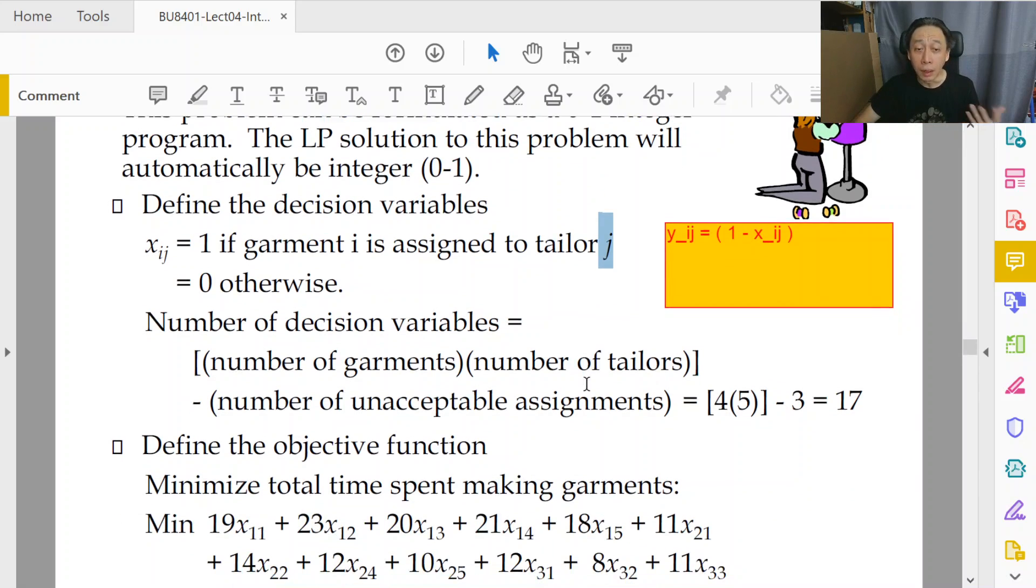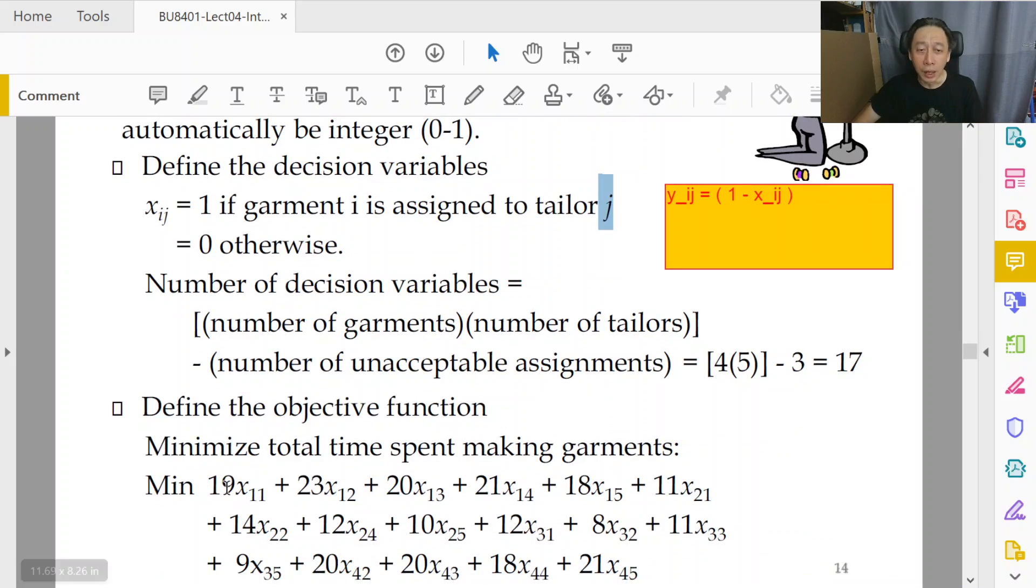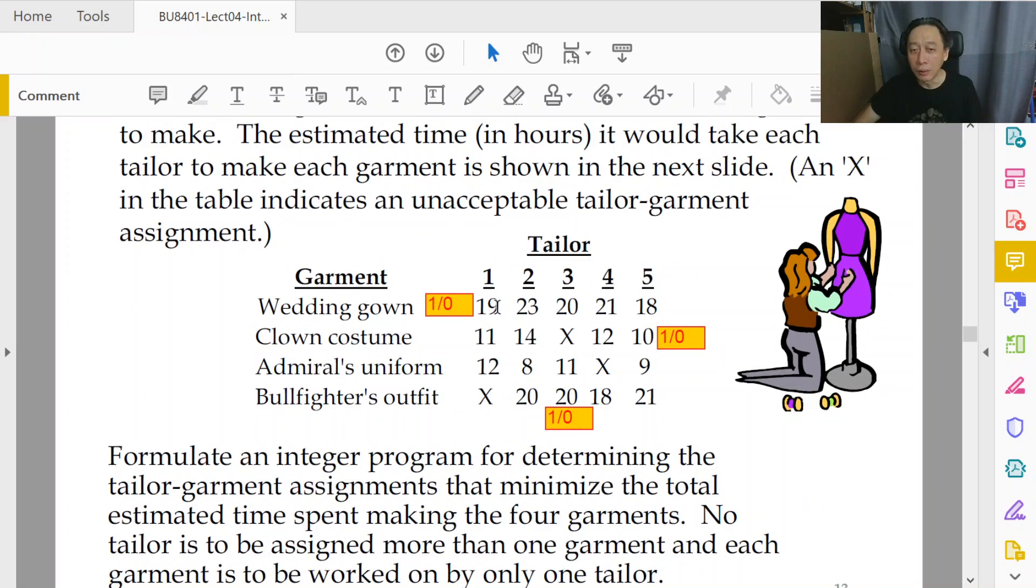Now, the next step is to formulate the objective function. We have, for example, 19 times whether or not we assign garment 1 to tailor 1, because when we do that, if we recall, tailor 1 will take 19 hours.